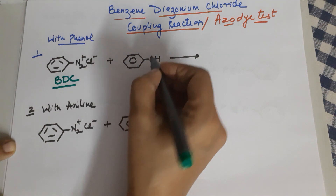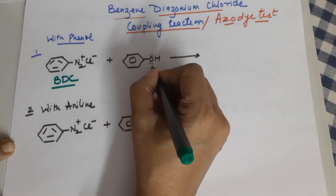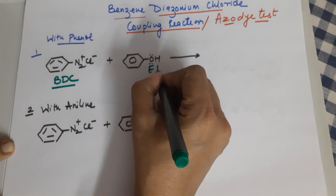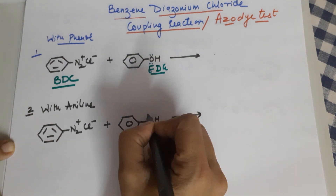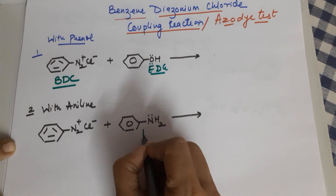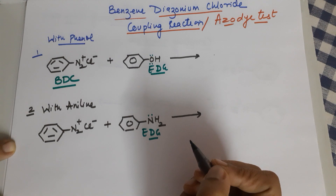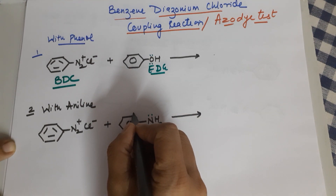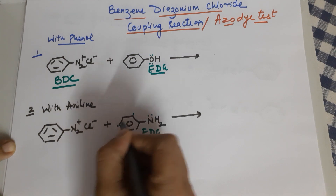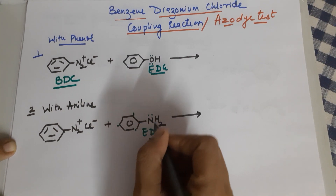Now phenol, as you very well know, has got an oxygen attached to benzene and it has a lone pair, so this becomes an electron donating group. Similarly, aniline has a nitrogen bonded to the benzene ring and this also has a lone pair, so this is also an electron donating group. Since they are electron donating groups, they increase the electron density at the ortho and para positions.